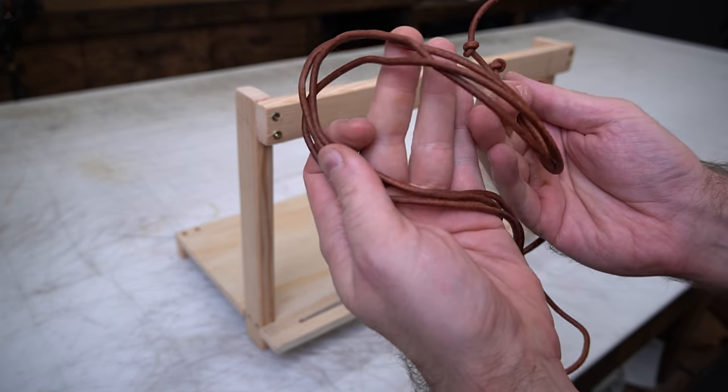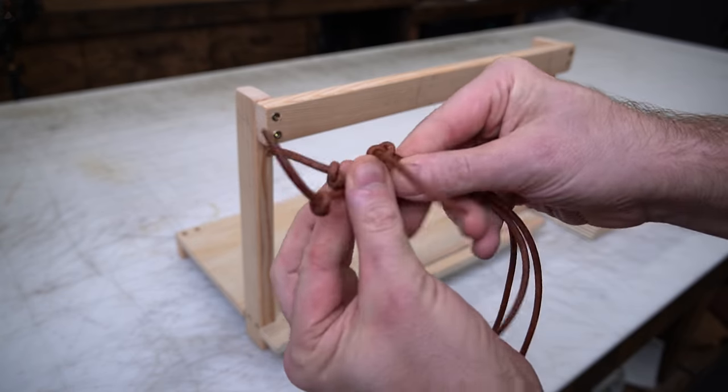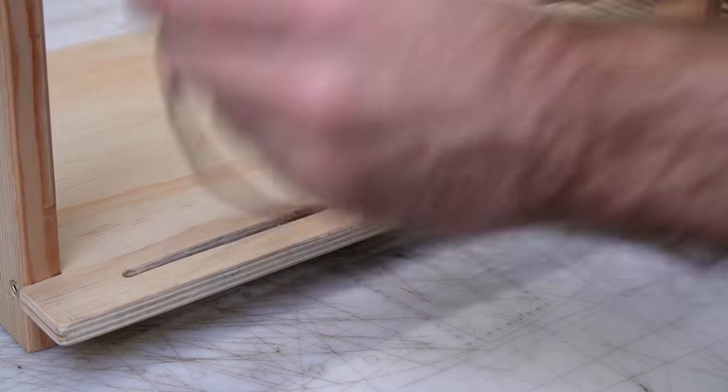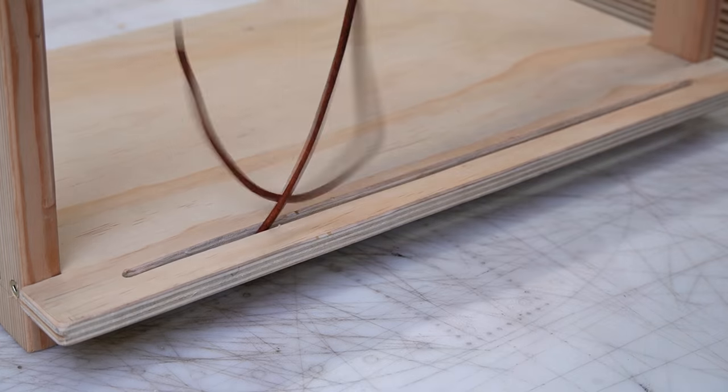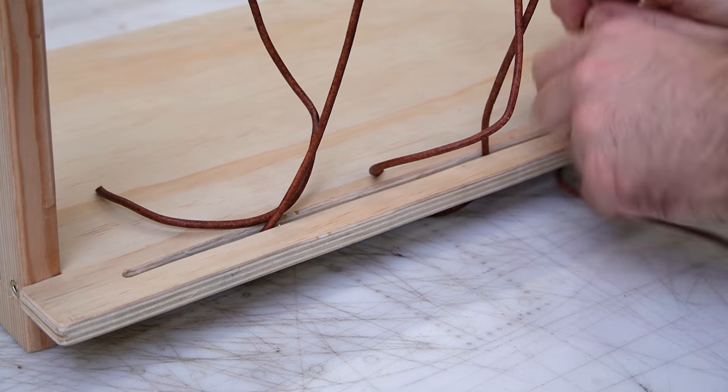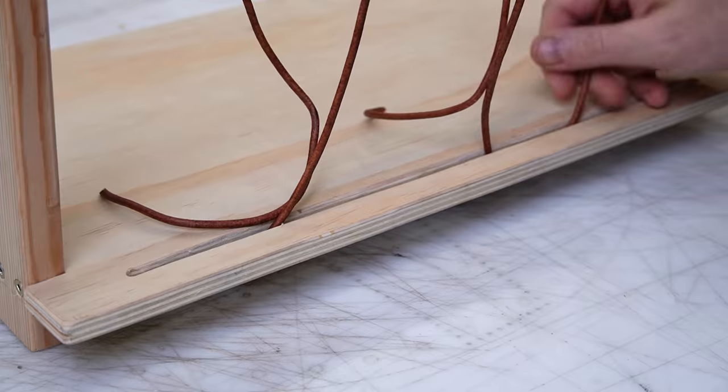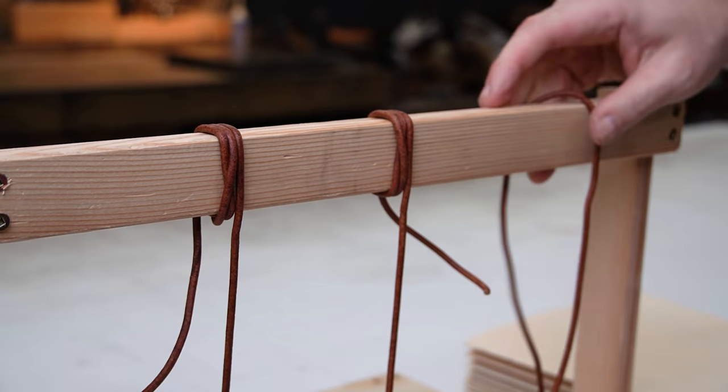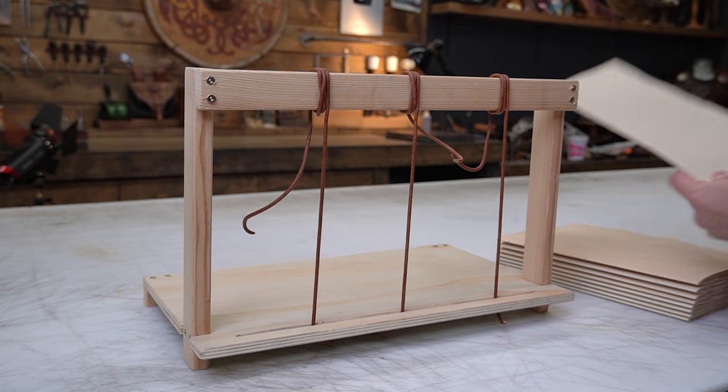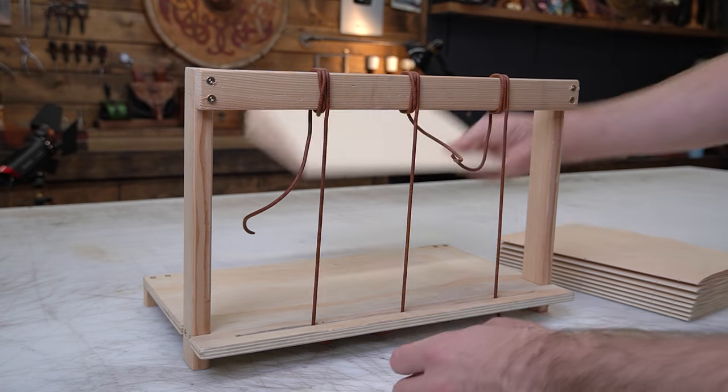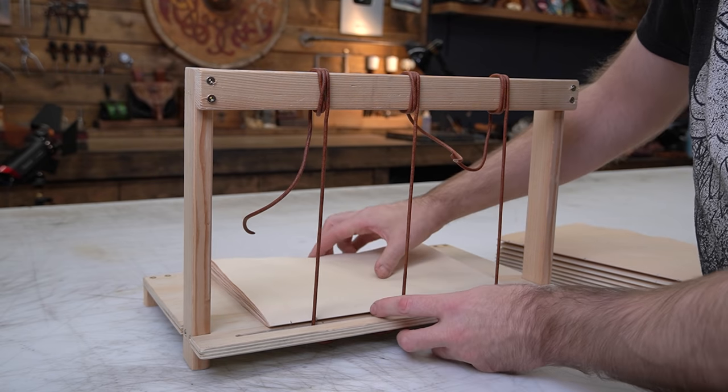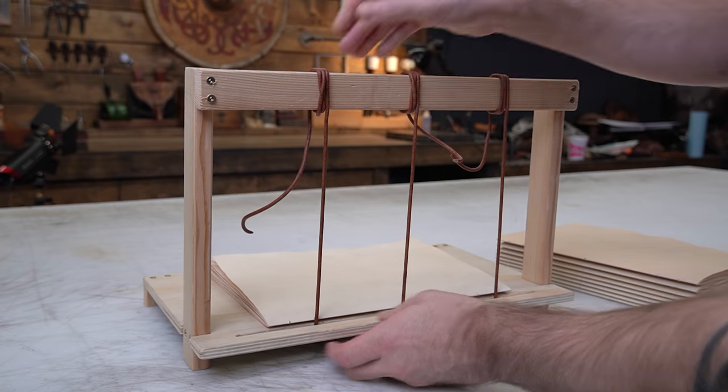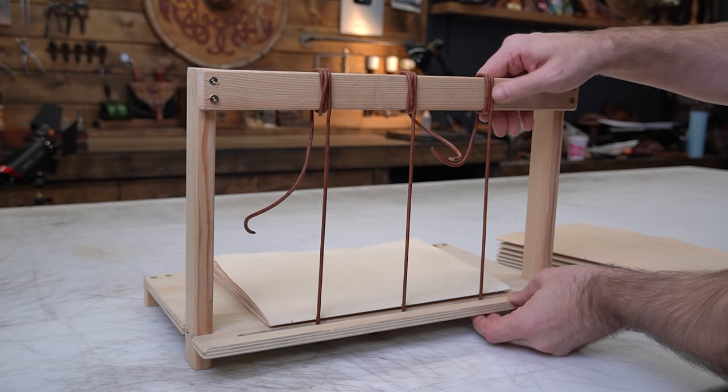Now that we have holes in all of our pages, it's time to stitch all these individual signatures together into one large block of paper for our book. I made this makeshift jig. It's way more complicated than it needs to be. You just need to be able to string up some twine or leather lace and stitch onto it.